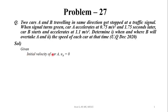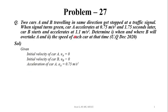The initial velocity of both cars: since both cars are starting from rest, the initial velocity of car A, U_A, will be 0. Also, the initial velocity of car B, U_B, will also be equal to 0. The acceleration of car A is given as 0.75 m per second squared, and the acceleration of car B is given as 1.1 m per second squared.